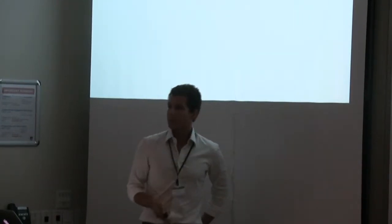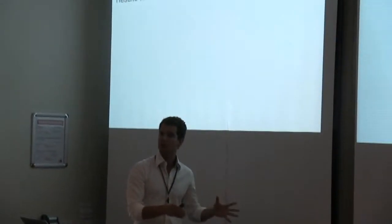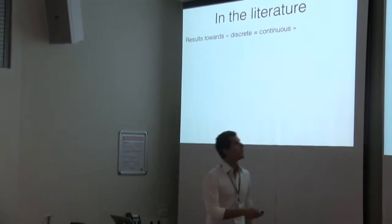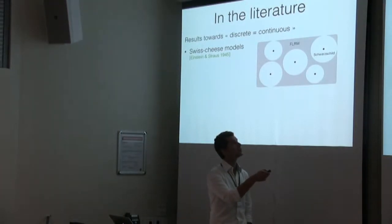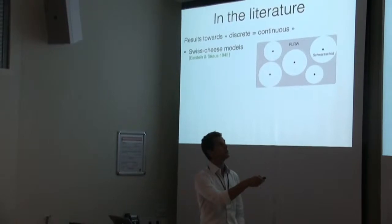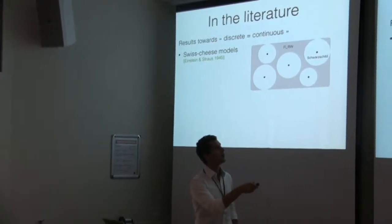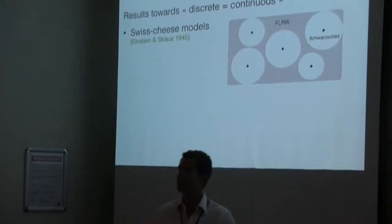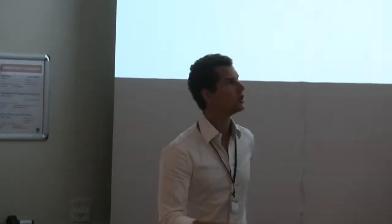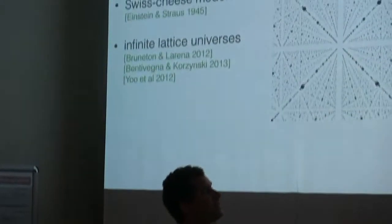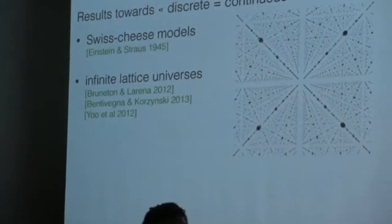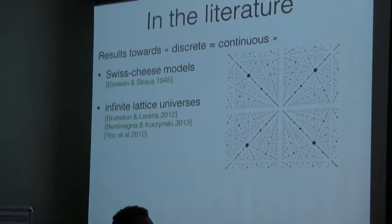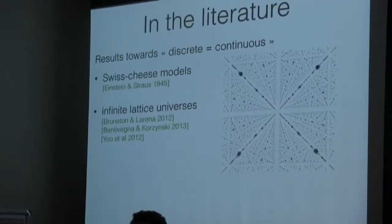Looking at previous work, we can separate it into two classes. Some works tend to show that a discrete universe is the same thing as a continuous universe — for example, the Swiss cheese approach proposed by Einstein and Strauss in the 1940s, where masses are introduced in a top-down way into an otherwise expanding universe, by construction preserving the same expansion as the purely Friedmann-Robertson-Walker geometry. You also have lattice universe models, for example Julien's approximate model and work by another speaker. Those works seem to show there is no difference between a discrete and a continuous universe.